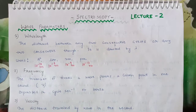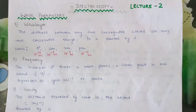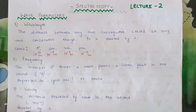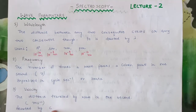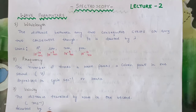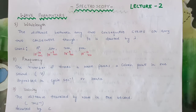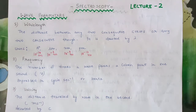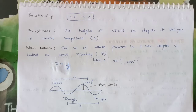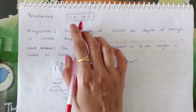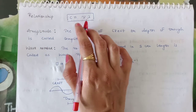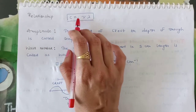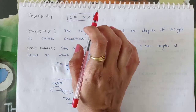Third entity is velocity — the distance travelled by a wave in one second. It is denoted by c. In spectroscopy, the velocity of any electromagnetic radiation is denoted by c. The relationship among these three quantities is: c (speed) equals frequency into wavelength.